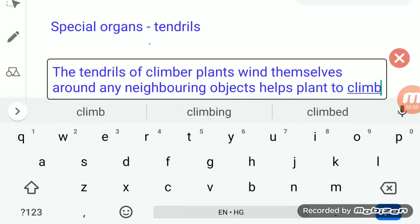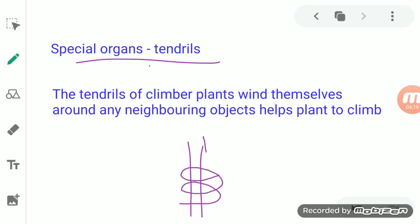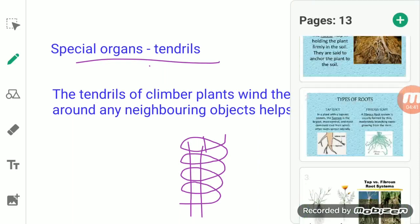Climber plants are able to climb up just because of the presence of this special organ — the tendril. These tendrils help them to wind up around a neighboring object. If there is a neighboring support, these climbers wind up around it, and due to this they climb up. They roll themselves around the neighboring object and climb upward. These are the main characteristics of climbers.